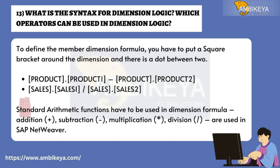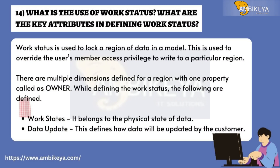Question 14: What is the use of work status and what are the key attributes in defining it? Work status is used to lock a region of data in a model. It is used to override the user's member access privilege to write to a particular region. Multiple dimensions are defined for a region with one property called a Zoner. When defining work status, the following are defined: Work States — belongs to the physical state of data; Data Update — defines how data will be updated by the customer.